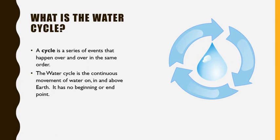And as we go through our unit, we're going to think a lot more about what is the water cycle. A cycle is a series of events that happen over and over, and not necessarily in the same order.